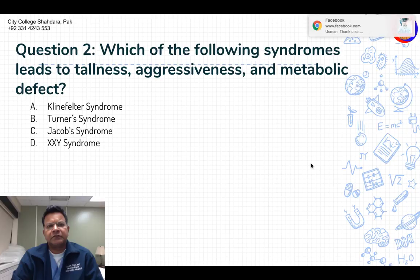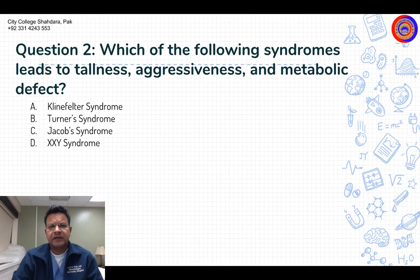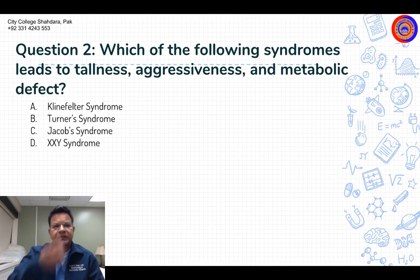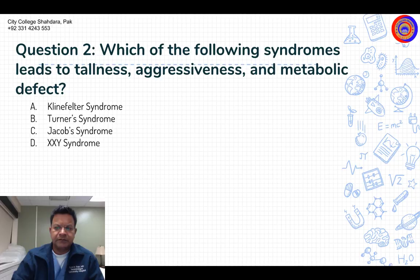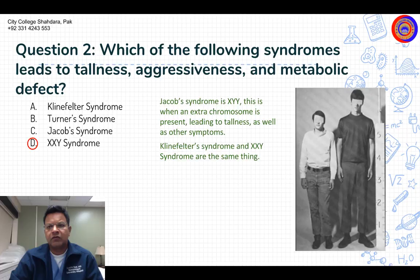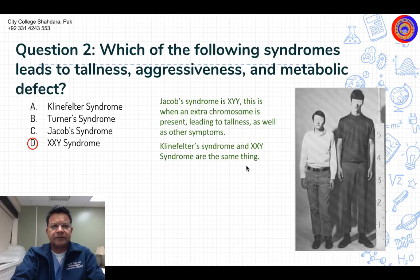Question number two: Which of the following syndromes leads to tallness, aggressiveness, and metabolic defect? Options are: Klinefelter syndrome, Turner syndrome, Jacob syndrome, and XXY syndrome. The answer is XXY syndrome. Note that Klinefelter syndrome and XXY syndrome are the same thing.